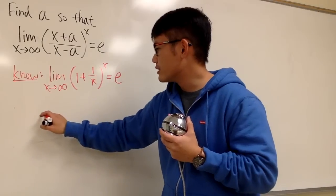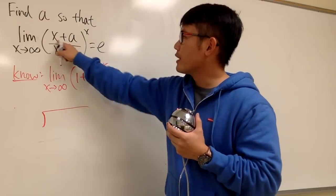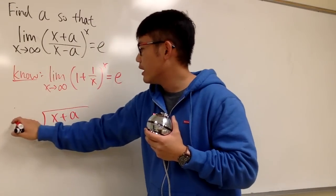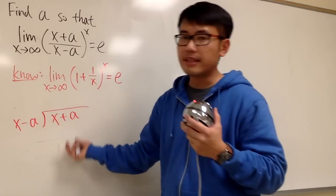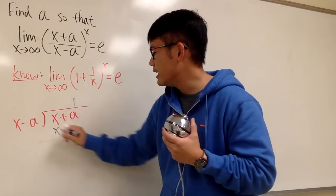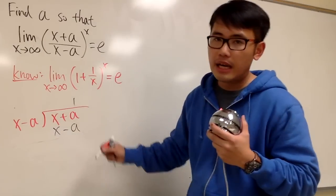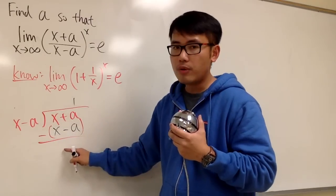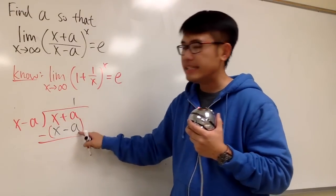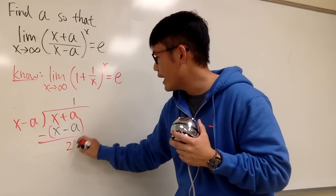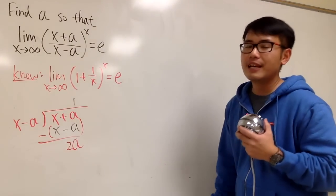Let me show you guys the long division here. I'll put down the top inside, so that's x plus a. I'll put down the denominator outside, x minus a. We know this will go in here one time. 1 times x is x, 1 times negative a is just negative a. And we're going to subtract. x minus x is 0. a minus negative a is the same as saying a plus a, which is 2a.